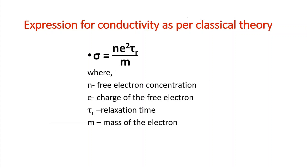The expression for conductivity as per classical theory: conductivity sigma equals N E squared tau_R divided by M. This is the first ever mathematical expression for electrical conductivity in metals. Here, N is the free electron concentration, E is the charge of the free electron, tau_R is the relaxation time, and M is the mass of the electron.